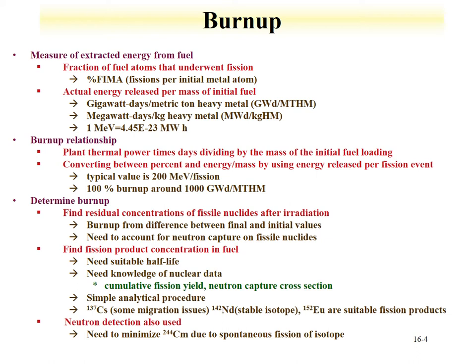A suitable burn-up indicator isotope needs a half-life that is relatively easy to measure - not too short, not too long - and one needs to know its cumulative fission yield and neutron capture cross-section. Certain isotopes such as cesium-137, neodymium-142, and europium-152 are often used as fission products to determine burn-up. One can also look at neutron detection to determine burn-up, though one needs to account for the influence of curium-244 due to its spontaneous fission.